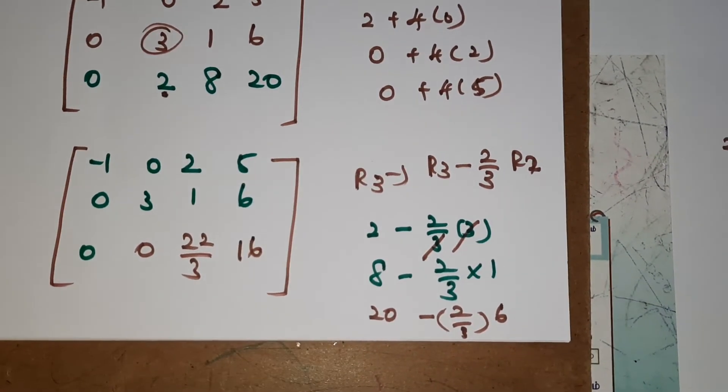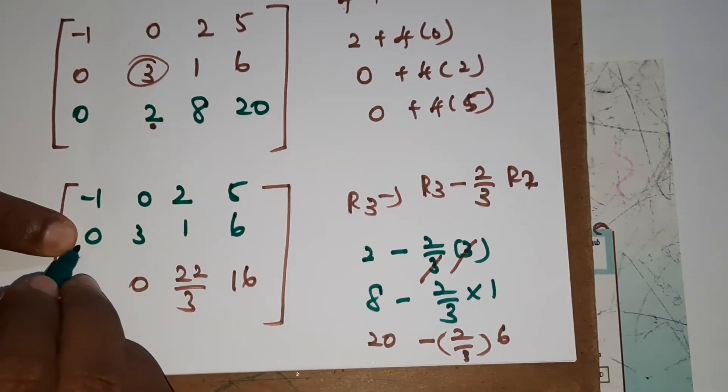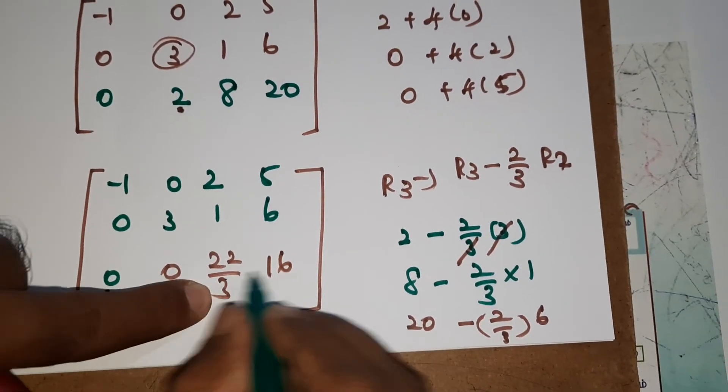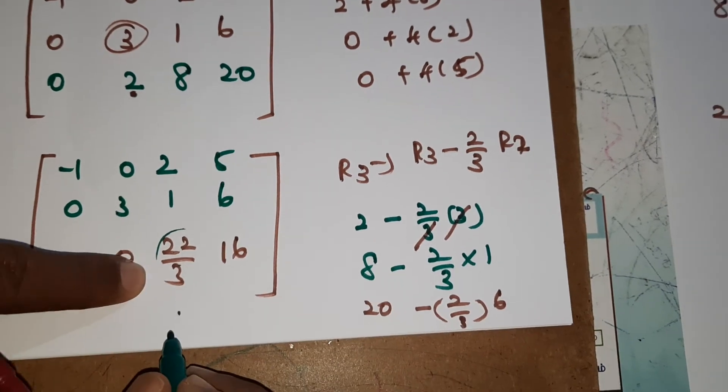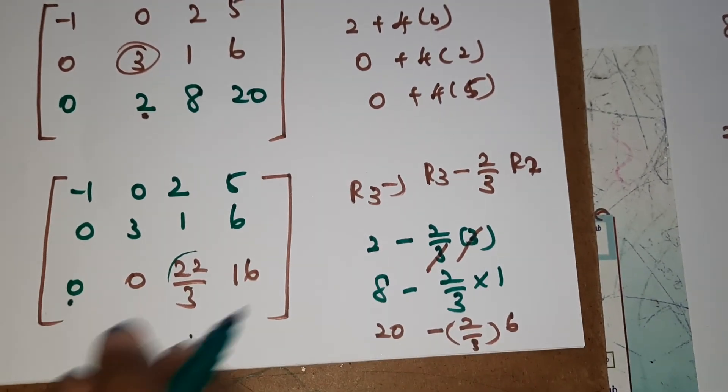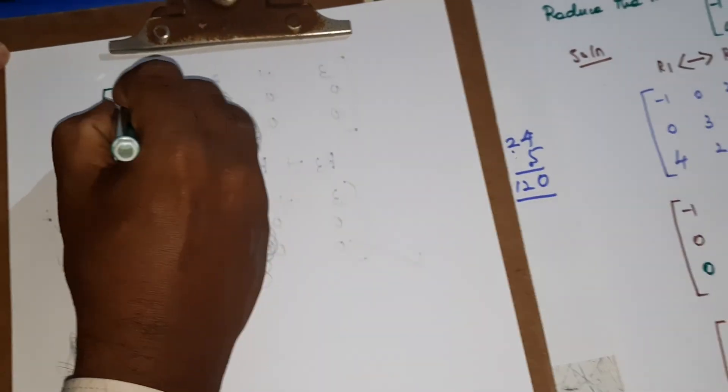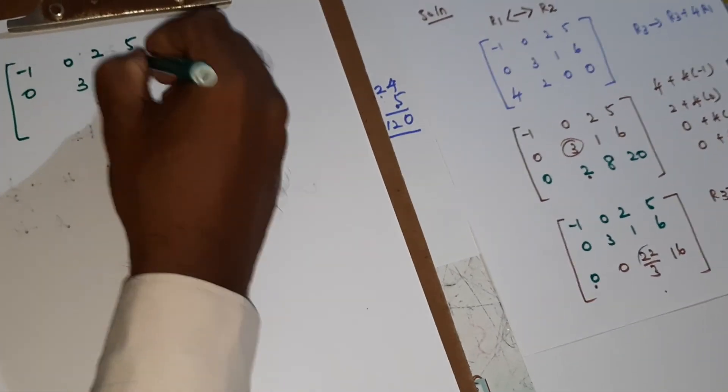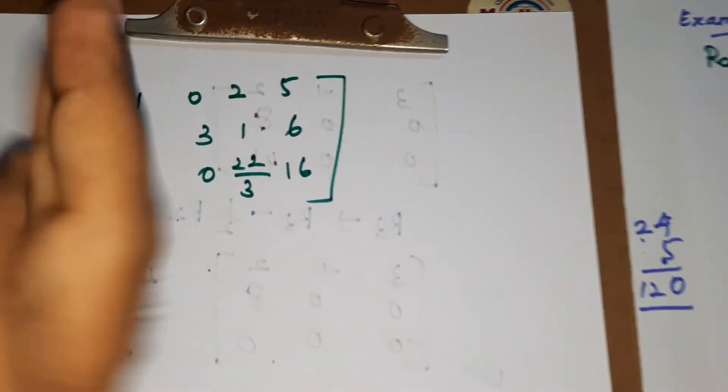So we have maximum elements will be 0. Because already the second element is starting with 0, underneath also 0. So second row, second element, we have non-zero digit, underneath also will be 0. So third row, there is still we didn't find a non-zero digit. So there is only the third row we have the fraction, we need to convert to a whole number. So how to convert to whole number? Each and every element multiply by 3, automatically 3 will be cancelled. So final row, 0, 0, 22 by 3, then 16 is there.